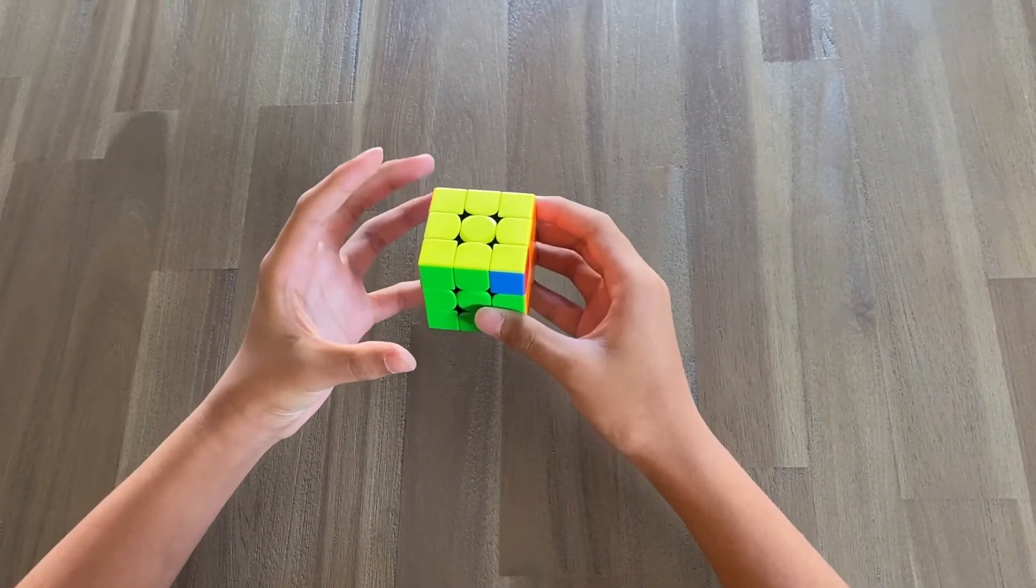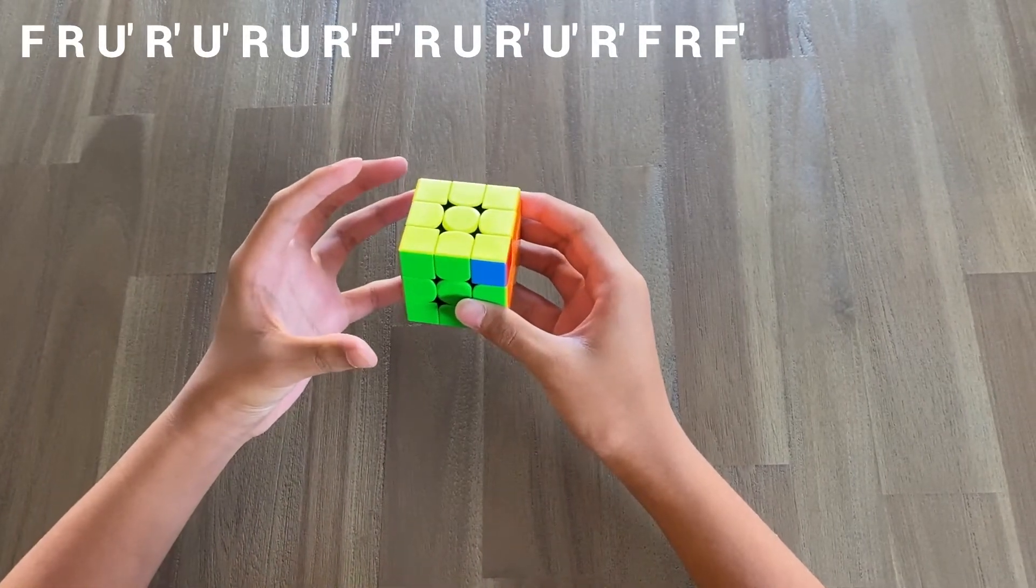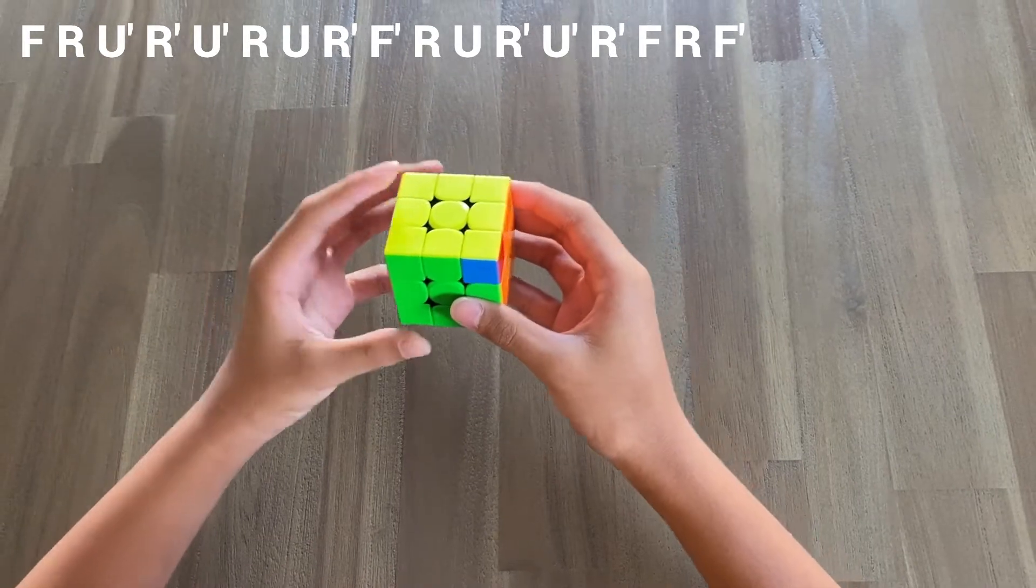Now, as an example, let's try to break down the Y perm into a set of smaller triggers so that it's easier to memorize. The Y perm that I prefer goes something like this.